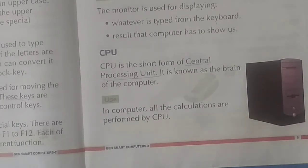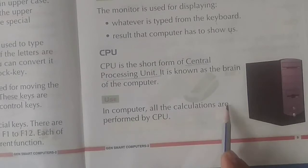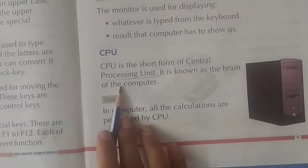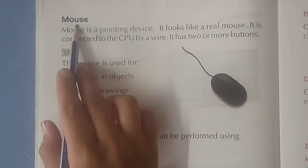All parts of the computer are connected with the CPU. Just like every wire in the computer connects to the CPU. In a computer, all calculations are performed by the CPU. Whatever calculations we do, where do they come from? From the brain — meaning from the CPU in the computer. Is it clear what is the CPU? The full form of CPU is Central Processing Unit.